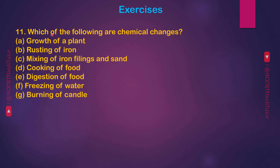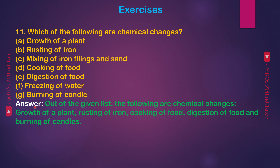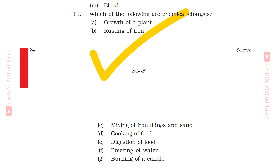Question 11: Which of the following are chemical changes? A — Growth of a plant, B — Rusting of iron, C — Cooking of food, D — Digestion of food, E — Freezing of water, F — Burning of candle. Answer: The chemical changes are — Growth of a plant, Rusting of iron, Cooking of food, Digestion of food, and Burning of candle. We have completed all the question answers from the chapter. If you find the video useful, kindly like it, or for any queries, comment below. Thank you for watching.